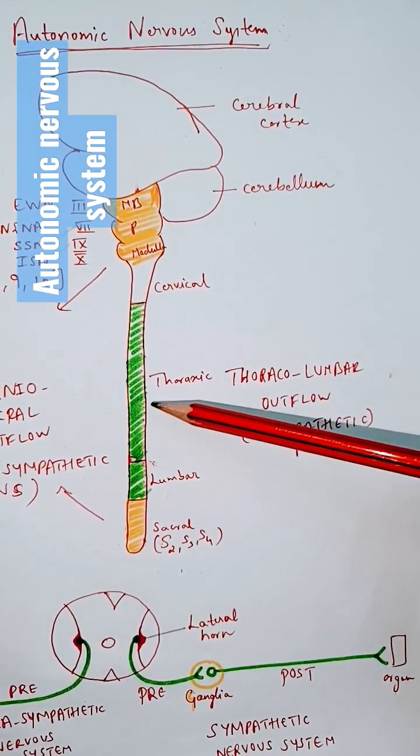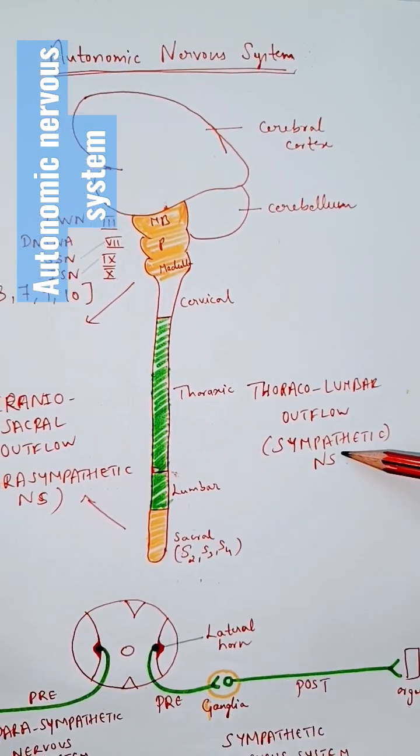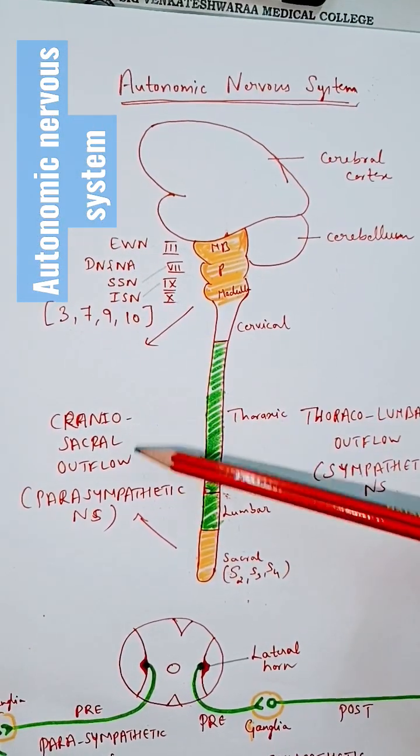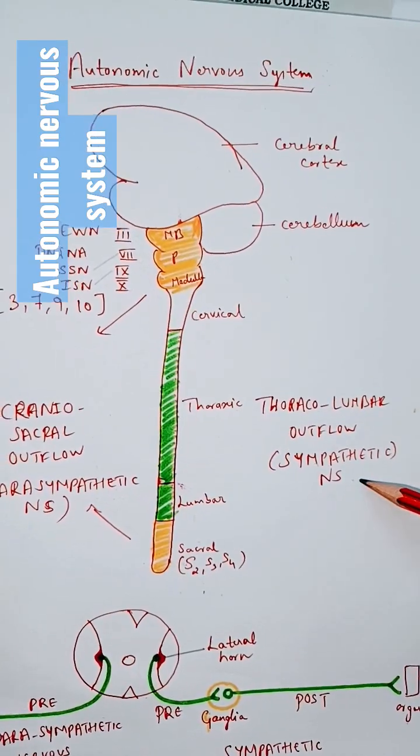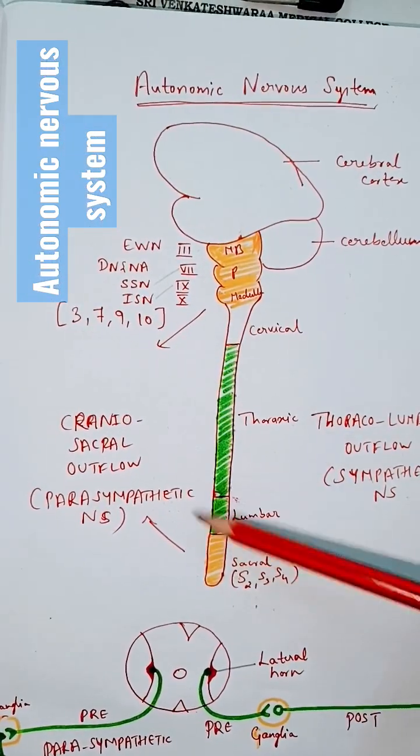The nerves coming out from the thoracic and lumbar segments of spinal cord are sympathetic in nature. That's why the autonomic nervous system is divided into parasympathetic and sympathetic nervous system—mainly thoracolumbar outflow is sympathetic, craniosacral outflow is parasympathetic.